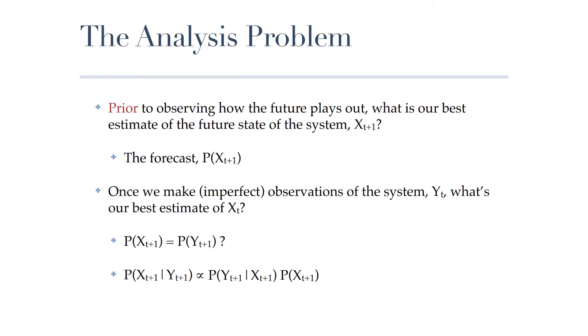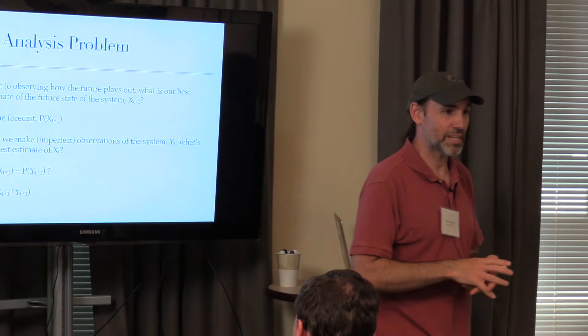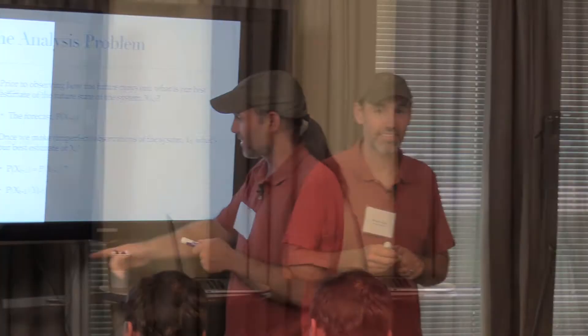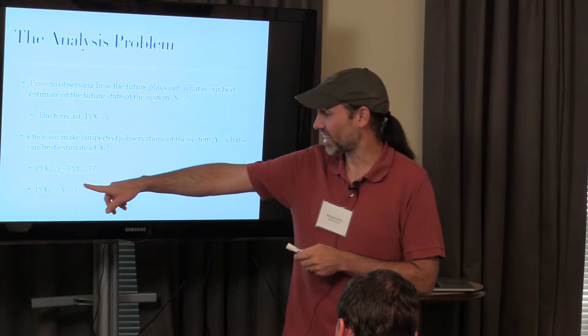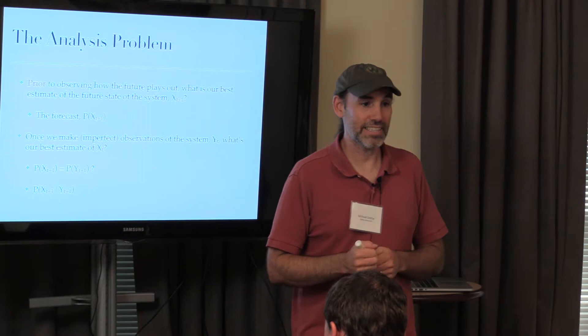We don't want to just follow the noise in the data; we want to balance that against it. So instead of just wanting the probability of Y, we started with the probability of X—our forecast. Now we want the probability of X given some new observations. So how do we get the probability of X conditioned on new data? Can we calculate this directly? What's the probability of the latent state X, the true state of the system, given the data? Not really.